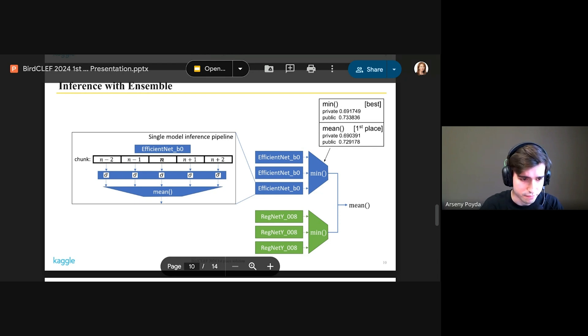We just averaged them, these chunks. And finally, we have three predictions for the chunk from three models. And instead of averaging them, our best solution uses the minimum function.